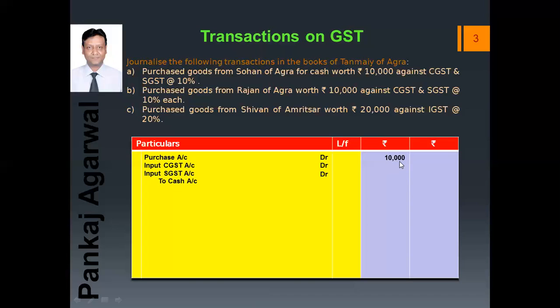The purchase amount is ₹10,000. Calculate 5% of ₹10,000, which comes to ₹500 for CGST. Again, for SGST the same amount of ₹500 will come. The total will be ₹11,000, which will come to cash. The narration will be: being goods purchased for cash.